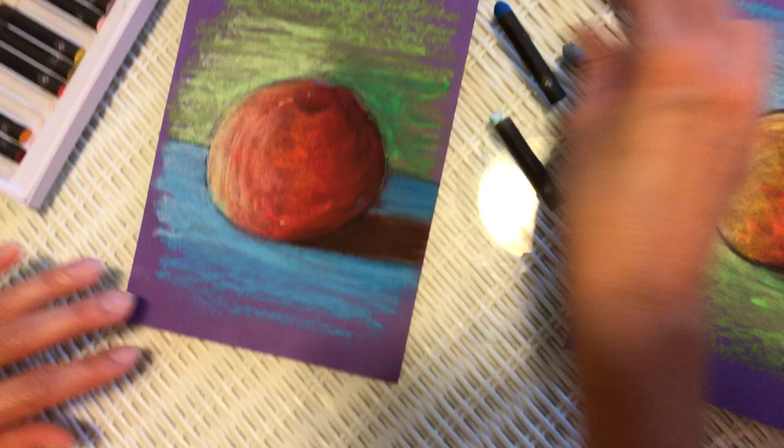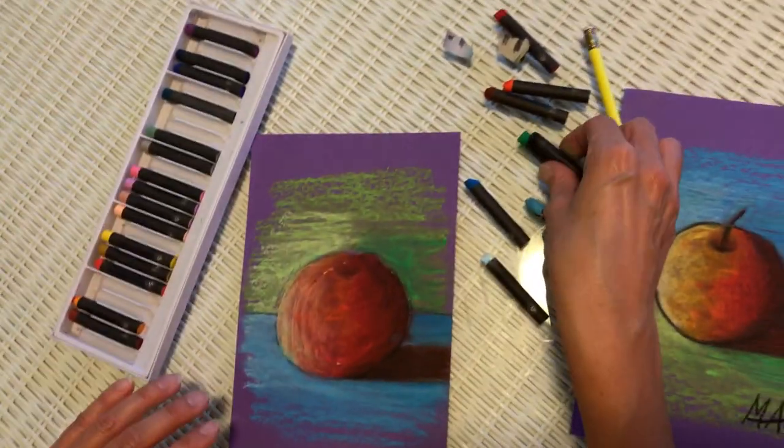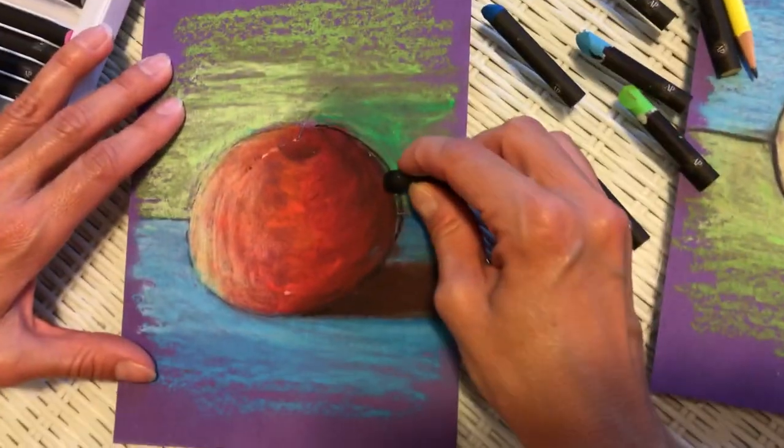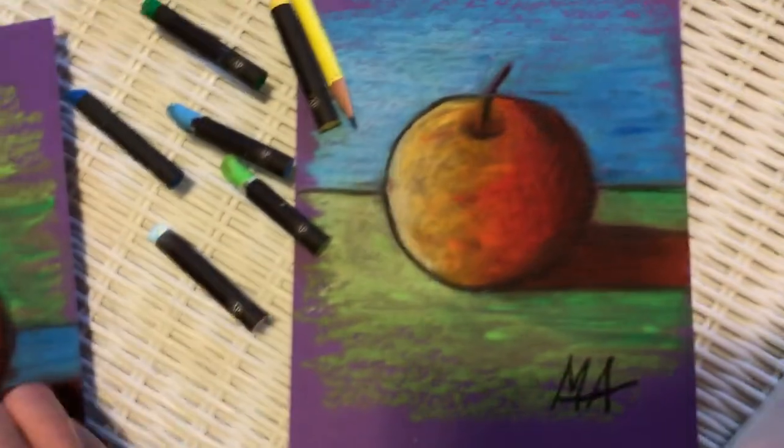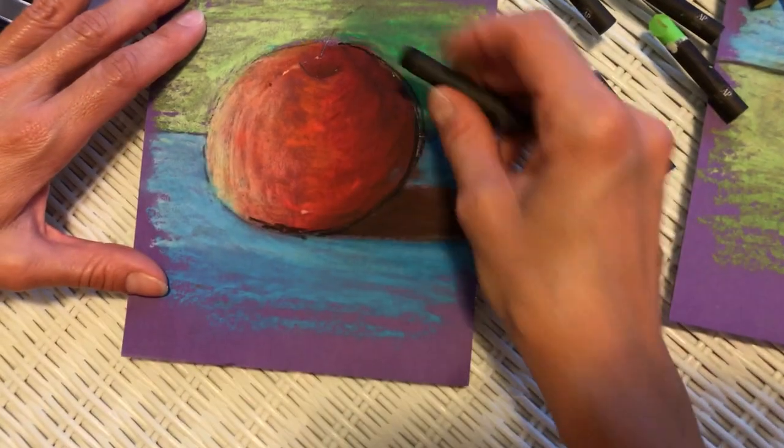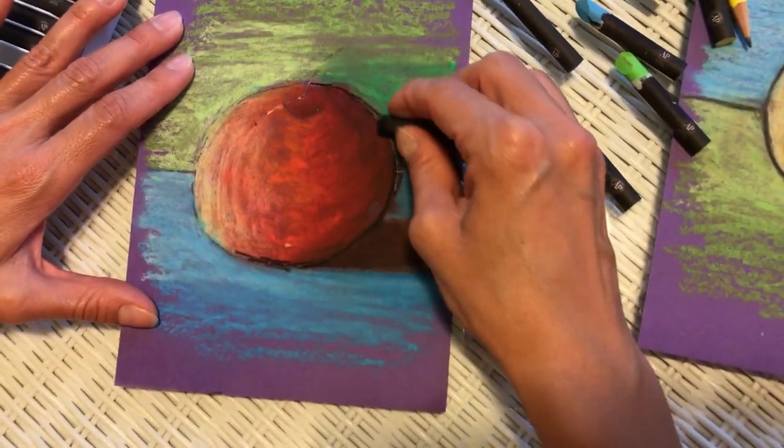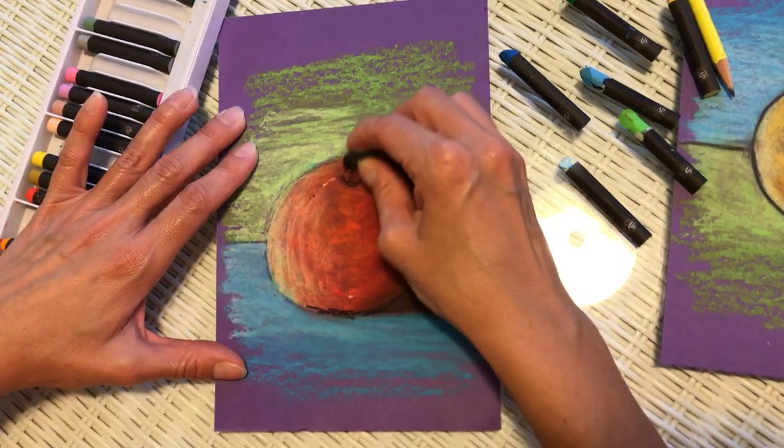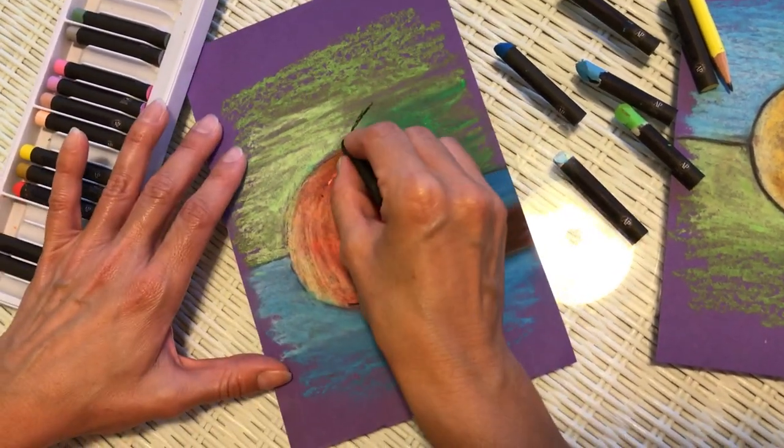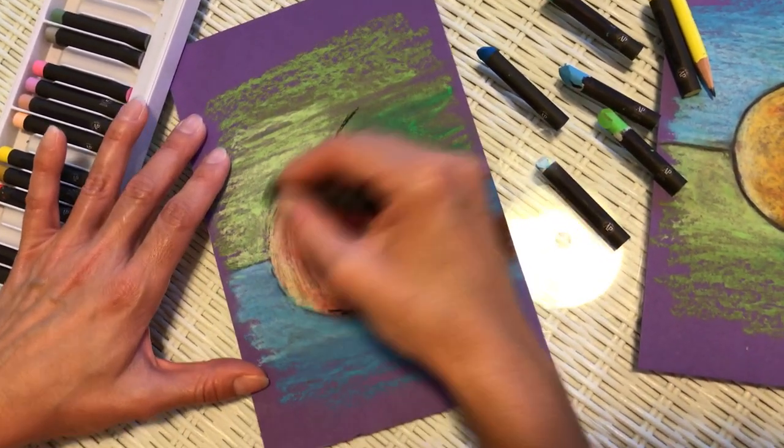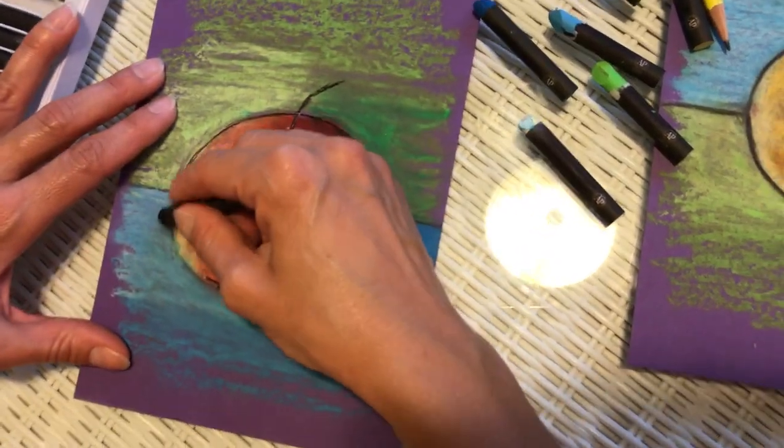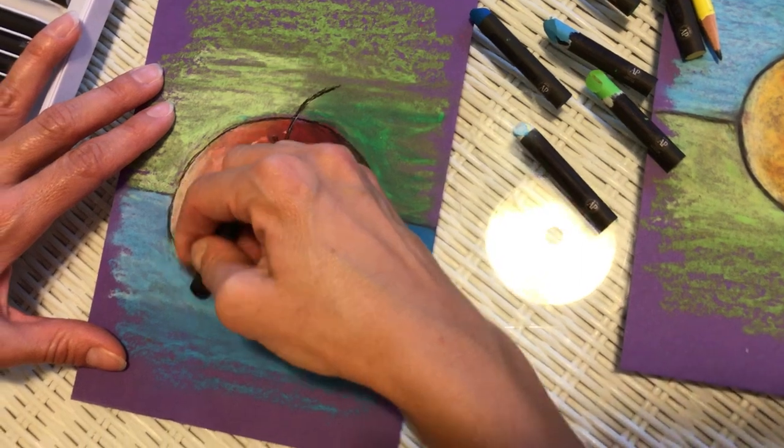And then with our black color, we can outline the object to provide a little bit more definition. Gently because even on the lighter area, just to give a little bit more definition to the contour line of the object.